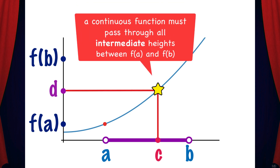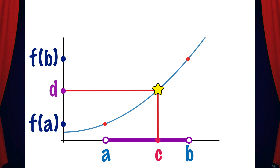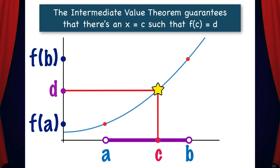In other words, if we have a continuous function, then it must pass through all of the intermediate heights between f(a) and f(b), just like the roller coaster train. And the Intermediate Value Theorem guarantees that there's an x value, x equals c, such that f(c) equals d.